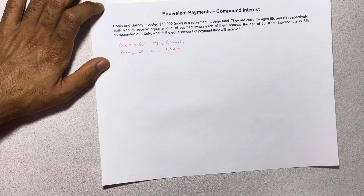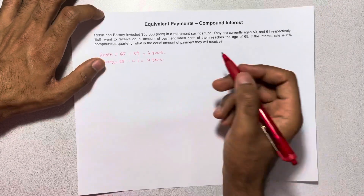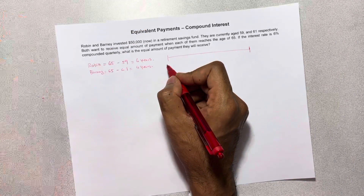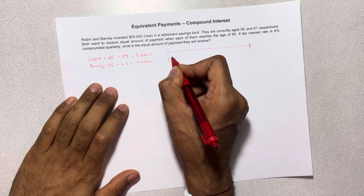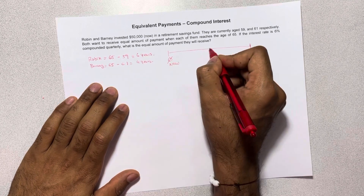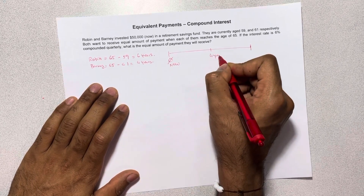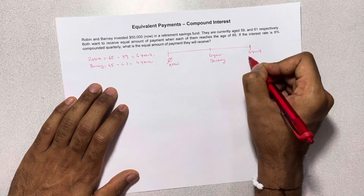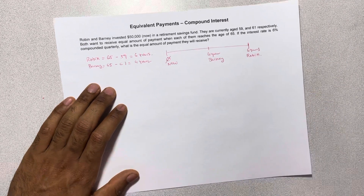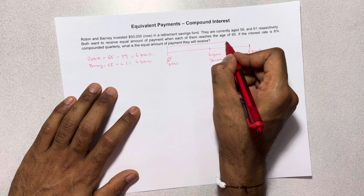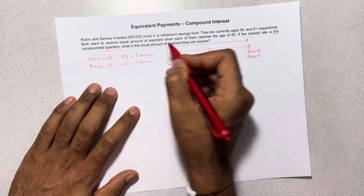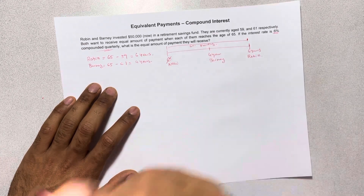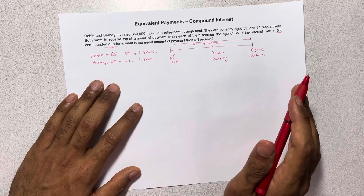With that said, let's draw the timeline. Zero is today. Four years from now Barney is going to retire, and six years from now Robin is going to retire. Our interest rate is six percent compounded quarterly.